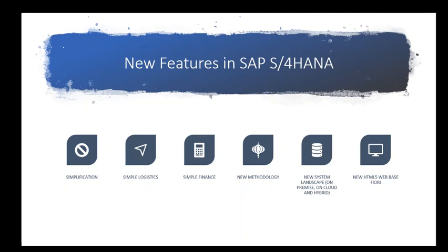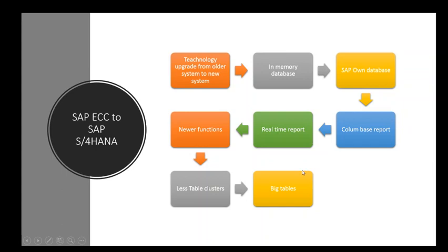In summary, SAP S4 HANA is a newer version of SAP's ERP application featuring an in-memory database, faster reports, and a faster overall system with SAP's own HANA database. Key features include real-time reporting, an in-memory database, fewer and larger consolidated tables, and SAP running on SUSE Linux as the underlying operating system.